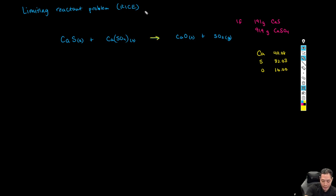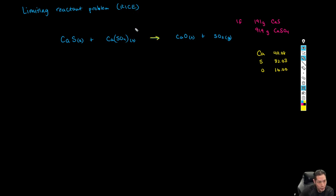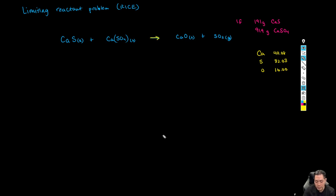We are going to use RICE, which stands for the recipe, the inventory, the change, and then what we end with. We have the following equation, and this is our recipe — this is how we know how much of each part that we have.